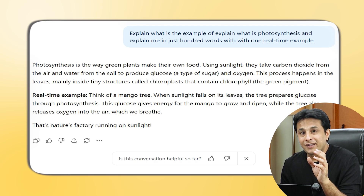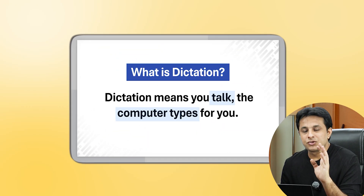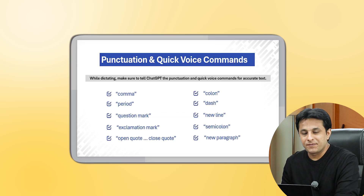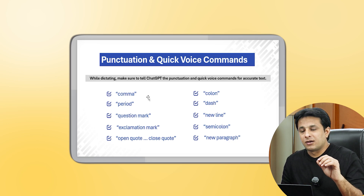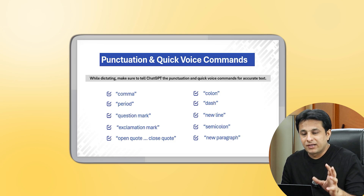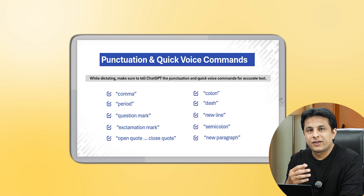If ChatGPT is fast, why don't you become a faster person? Rather than typing, start switching to voice mode — the dictate option. Now, there are some things you need to understand. There are voice commands for punctuation. For example, when you're speaking and you need a comma, period, exclamation mark, or question mark, you can just say those words out loud — 'comma,' 'period,' 'exclamation,' 'question mark' — and it will actually insert those punctuation marks.